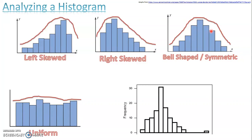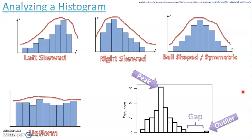If I look at a histogram, I can use key terms we've already learned. The peak is the highest point on the histogram. There are gaps in this histogram — a big space between two of the intervals. And we have one interval that sticks out from the rest, which, just like before, we call an outlier. I can use all these same terms with histograms.